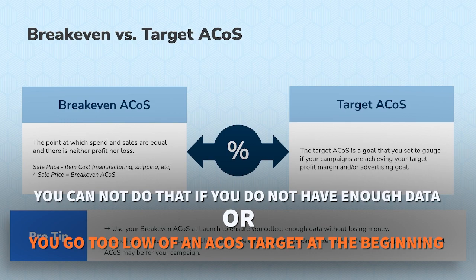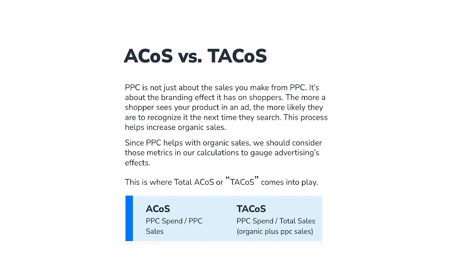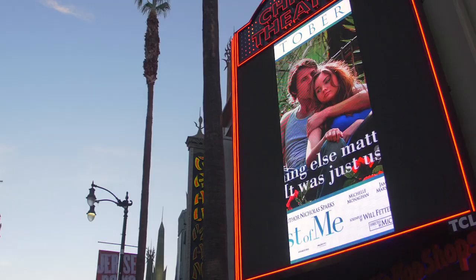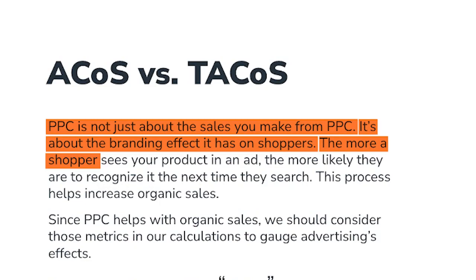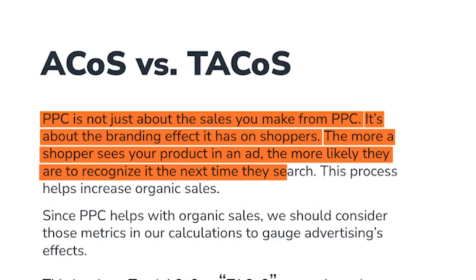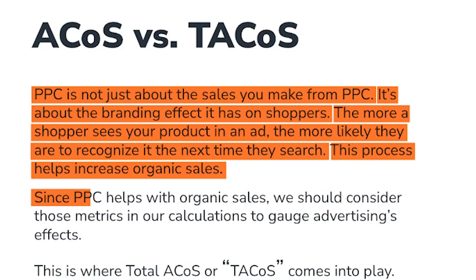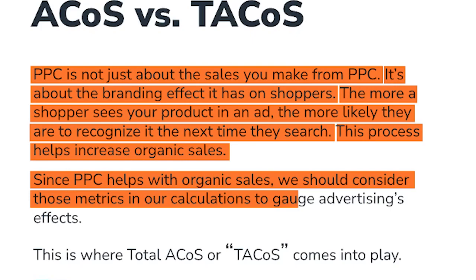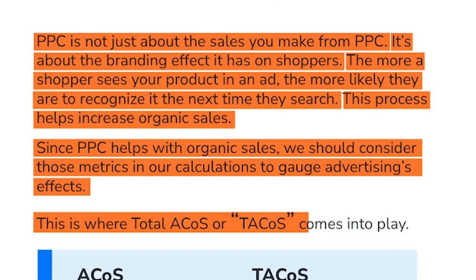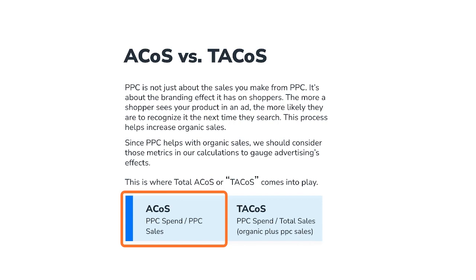So what's the difference between ACoS versus TACoS? PPC is not just about the sales you make from PPC — it's about the branding effect it has on shoppers, just like a commercial, an ad, or a billboard. The more a shopper sees your product in an ad, the more likely they are to remember it and recognize it the next time they do a similar search. This helps increase organic sales too, because they may come back and type in your brand name directly. Since PPC helps with organic sales, we should consider those metrics in our calculations — and that is where total ACoS, or TACoS, comes into play. ACoS is PPC spend divided by PPC sales; TACoS is PPC spend divided by total sales, which is organic plus PPC sales.